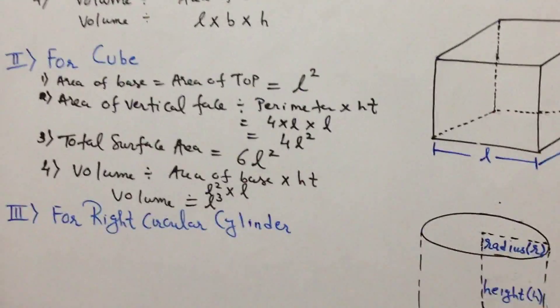The final formula is volume. Using the general formula: volume equals area of base into height. Every face is a square, so area of base is L × L = L². Height is also L. Therefore, volume equals L² into L, which equals L cubed.